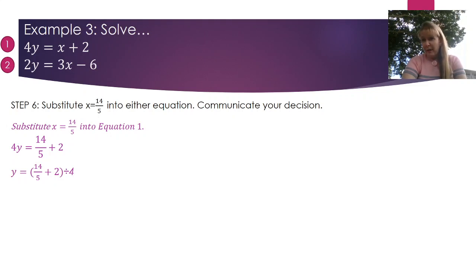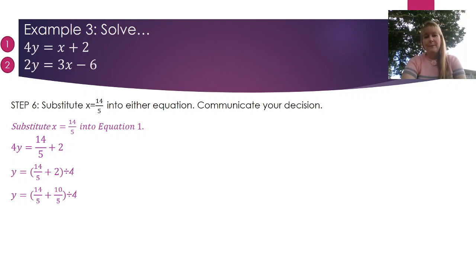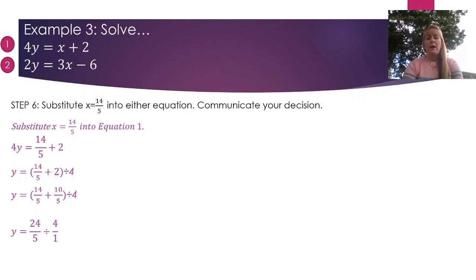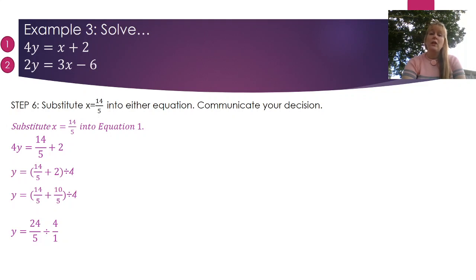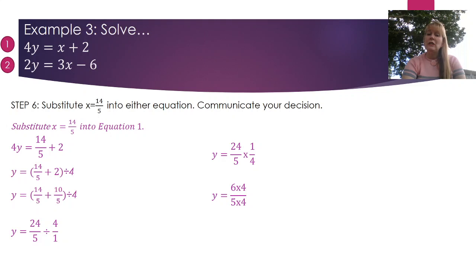Now it gets a little complicated — you need to be comfortable with fractions. I convert the whole number 2 to an equivalent fraction: 10/5. That lets me add the two fractions since they share the same denominator, giving 24/5. So y = (24/5) ÷ 4. To divide fractions, change the division sign to multiplication and flip the right-hand fraction: (24/5) × (1/4). Since 24 = 6 × 4, the 4s cancel, leaving y = 6/5.